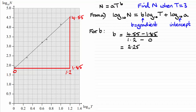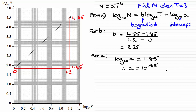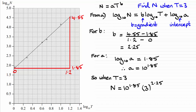Next we need to find a, which is given by the intercept. We can see that the intercept is at 1.85. So the log of a in base 10 must be 1.85. To get a, I take the inverse: a equals 10 raised to the power 1.85. I'll leave it as that value. Now I'm in a position to work out n when t equals 3 — it's just a question of substituting t = 3 and our values for a and b.